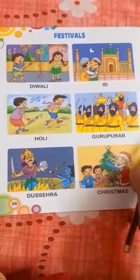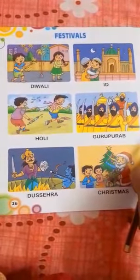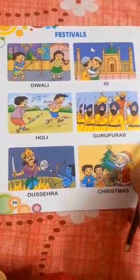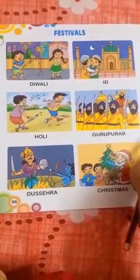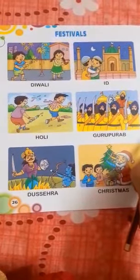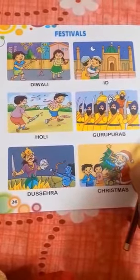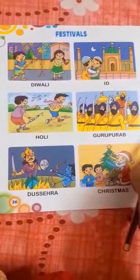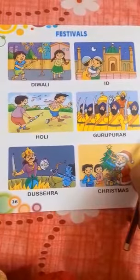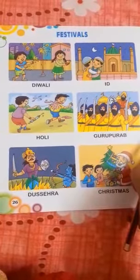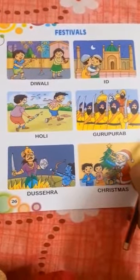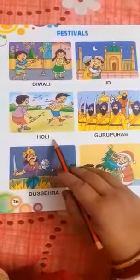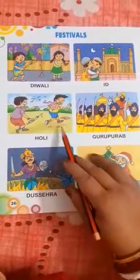Holi is a religious spring festival celebrated by Hindus. It is a festival celebrated with colors — many kinds of colors — water, and the exchange of sweets. Now, what is the spelling of Holi? H-O-L-I, Holi.